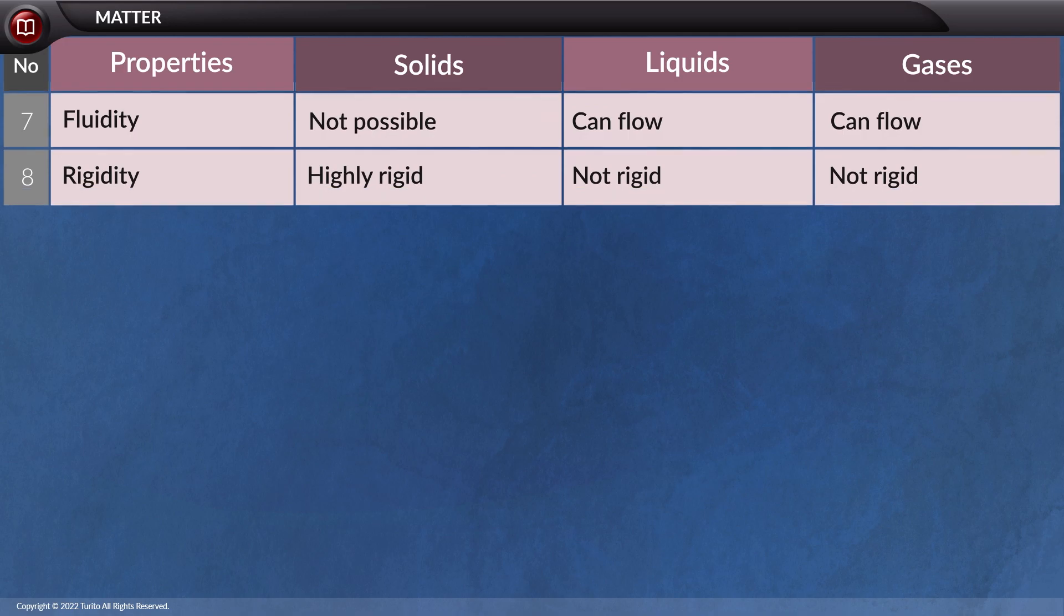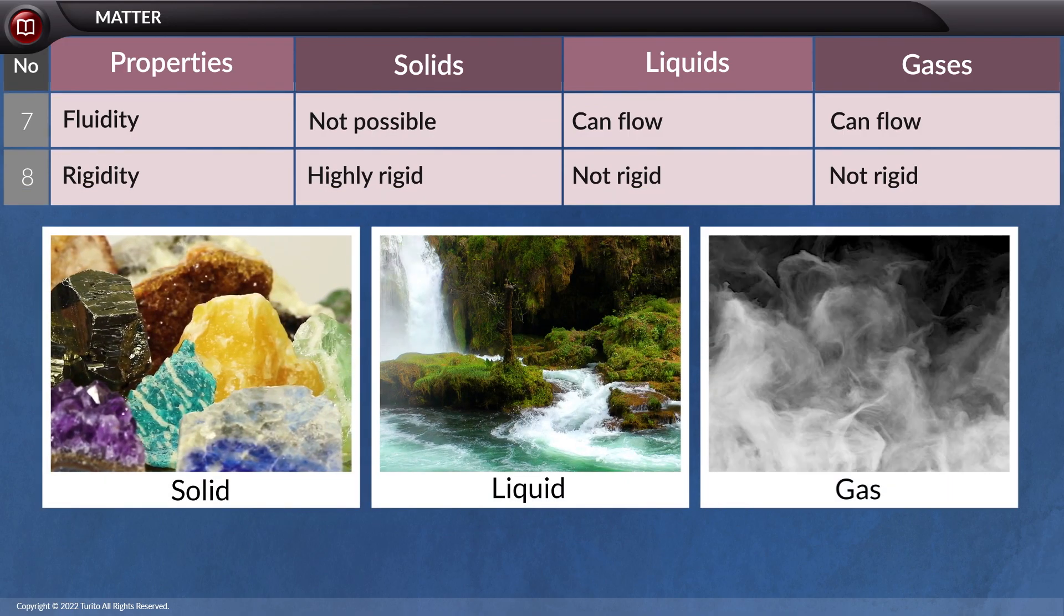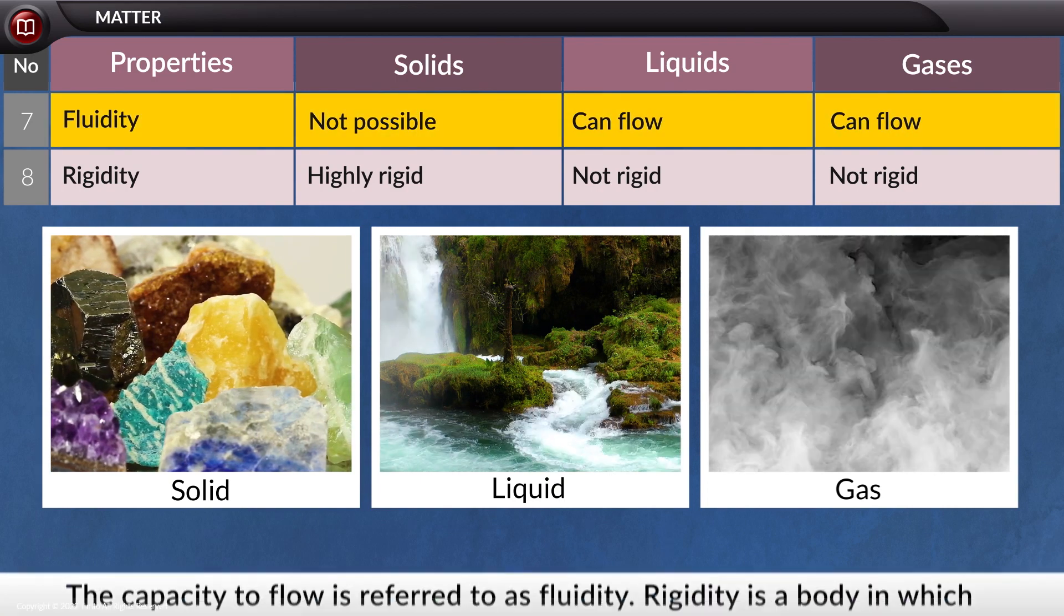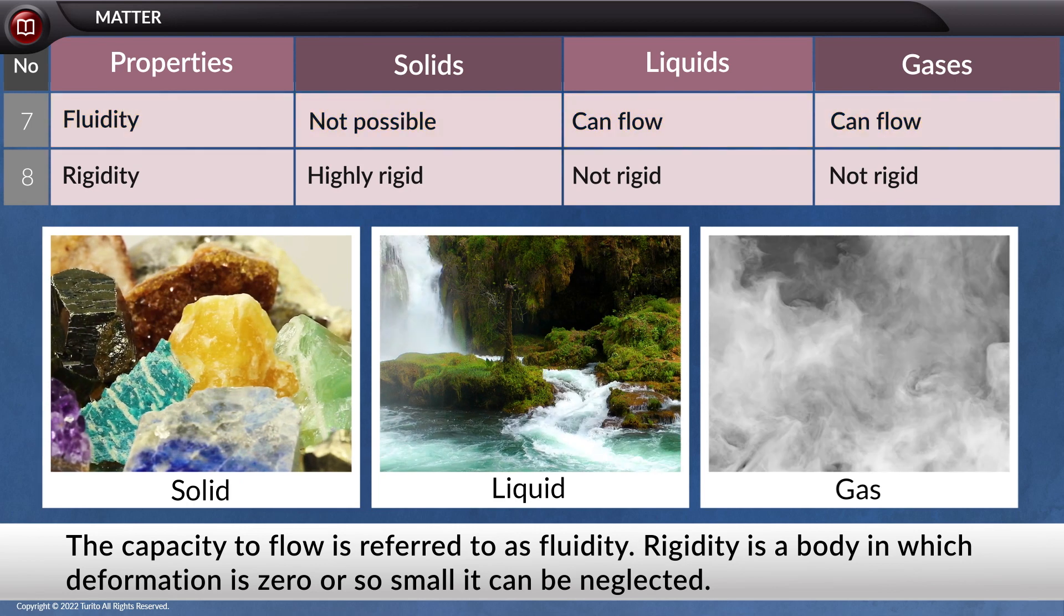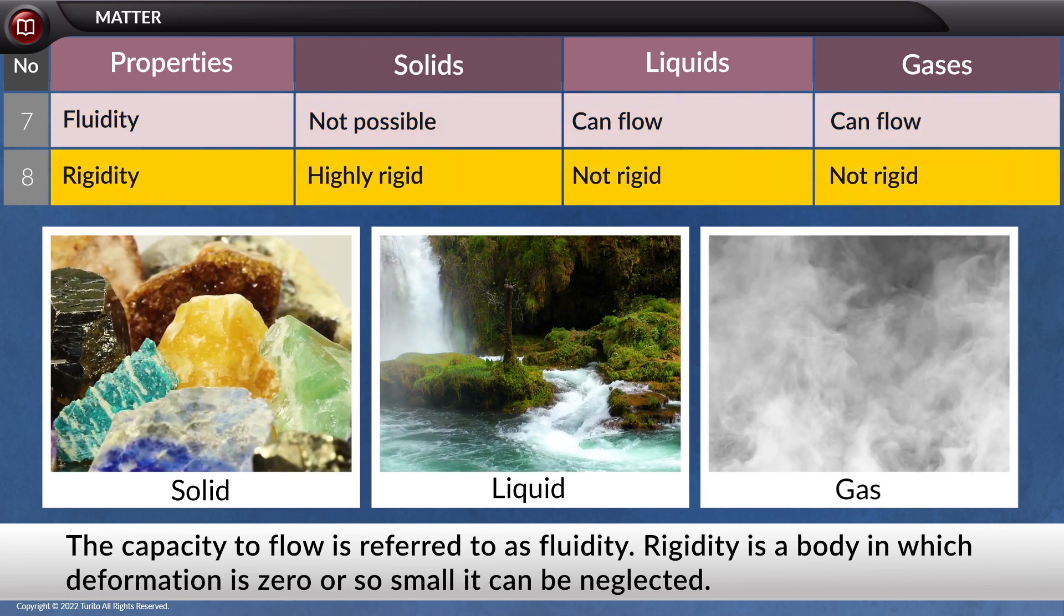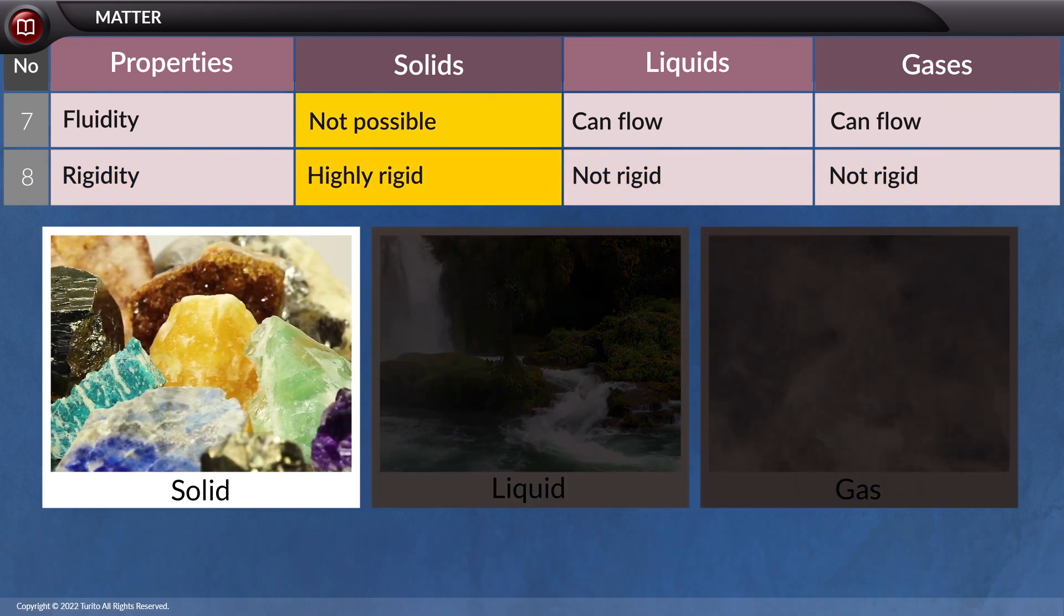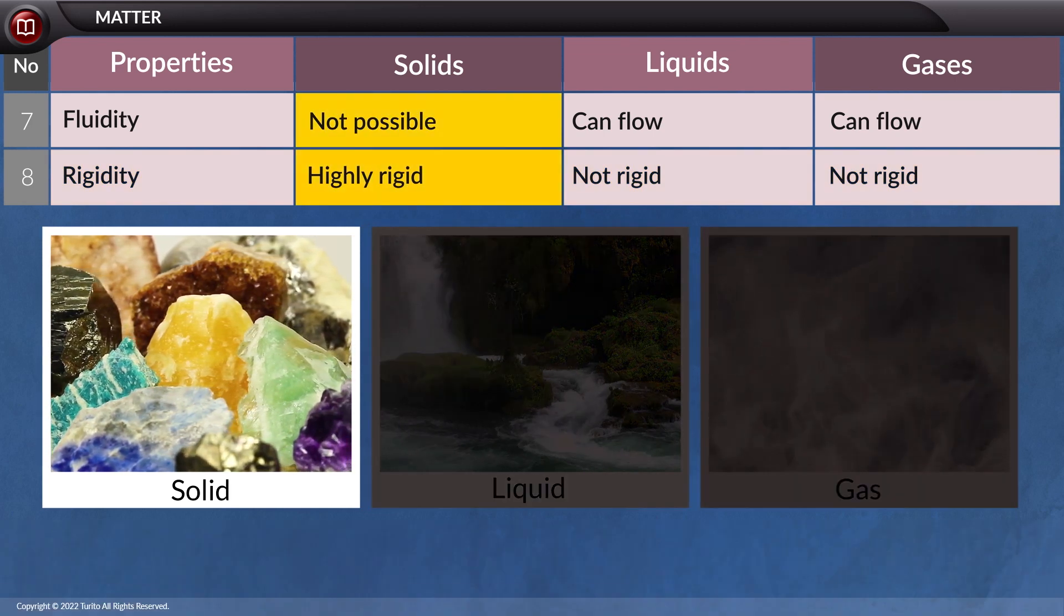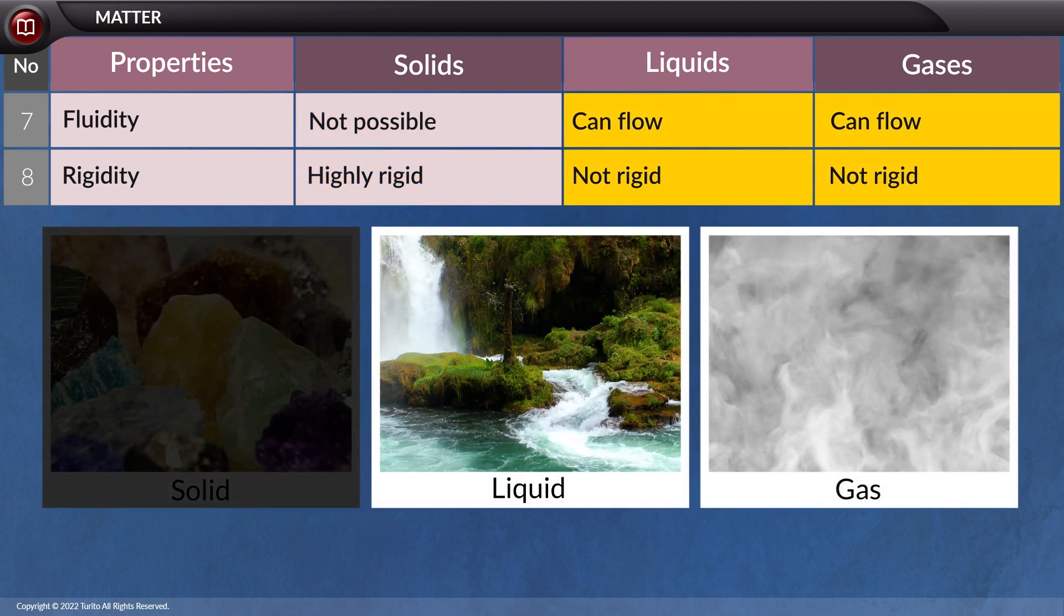The next properties to consider after compressibility is fluidity and rigidity. What is fluidity? The capacity to flow is referred to as fluidity. While rigidity is a body in which deformation is zero, or so small, it can be neglected. Solids can't flow since they're so rigid. When it comes to liquids or gases, they are considered fluids, that is, they can flow.